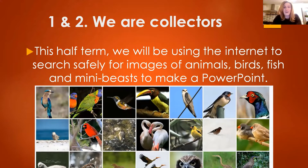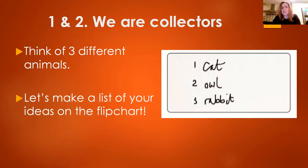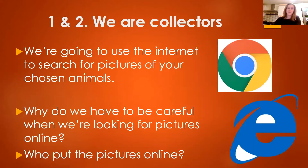This half term we're going to be using the internet to search safely for images and pictures of animals, birds, fish, and mini beasts to make a PowerPoint of our own. The first thing we need to do is think of three different animals. I've written here cat, owl, and rabbit, but you could have three of any animal you like. Pause the video and write down three animals you would like to look up on the internet.